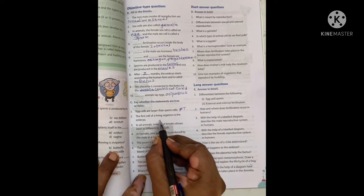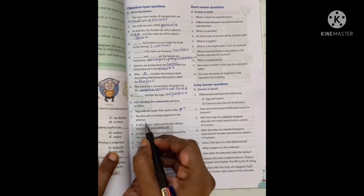The first cell of a living organism is the zygote.